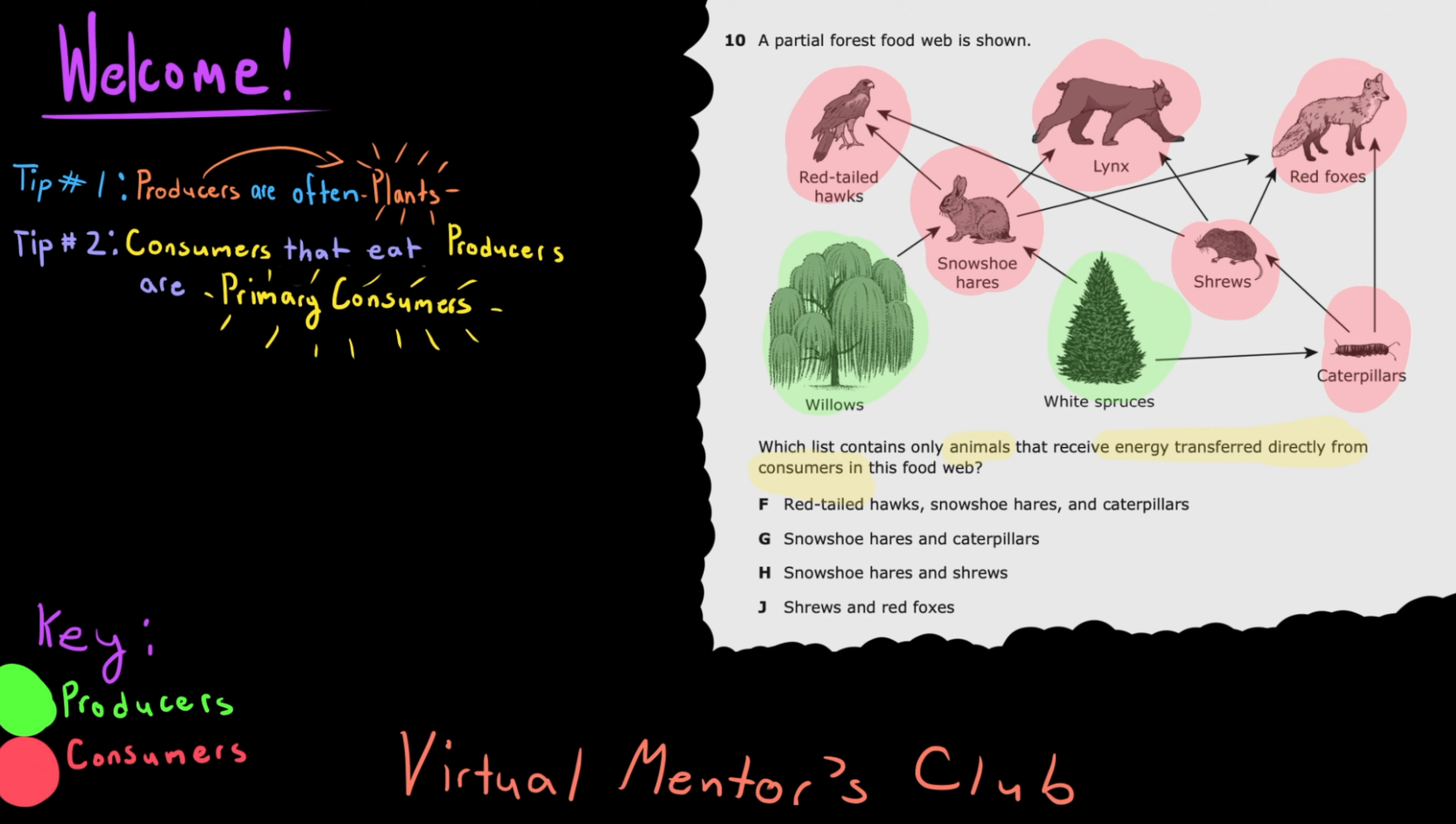I'll be highlighting those in yellow once again. So we know snowshoe hares are primary consumers because they only eat producers willows and white spruces. And we know that caterpillars are primary consumers because they eat white spruces.